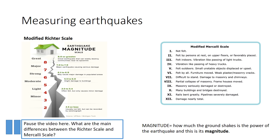Earthquakes are measured using machines called seismometers. They record the shaking as waves on a graph. From the graph, scientists can tell how much energy the earthquake gave out, and the amount of energy an earthquake gives out is called its magnitude. We can show that on the Richter scale. The Richter scale is a logarithmic scale, so for example a magnitude 6 earthquake is 10 times more powerful than a magnitude 5 earthquake, and 100 times more powerful than one measuring 4. There is no upper limit to this scale.